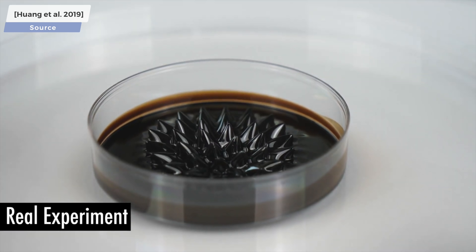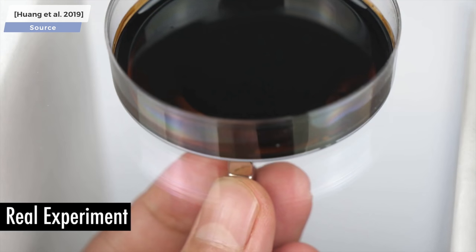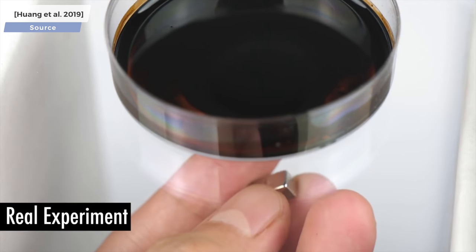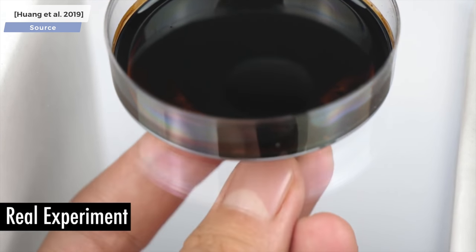But the strength of the magnetic field is not the only factor that a simulation needs to take into account. Here is another real experiment that shows that the orientation of the magnet also makes a great deal of difference to the distortions of the fluid surface.